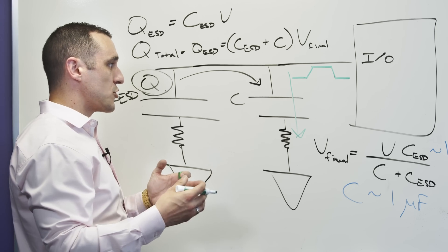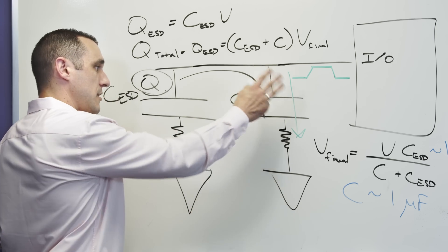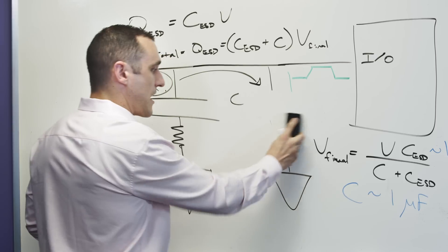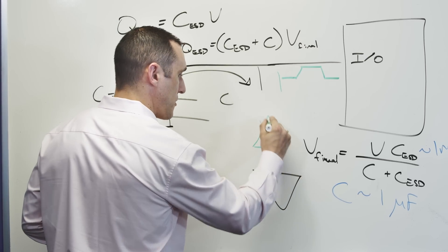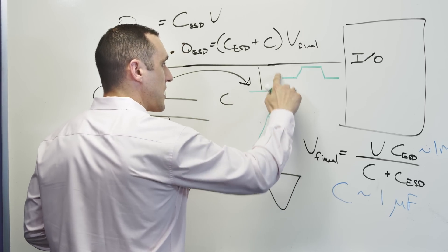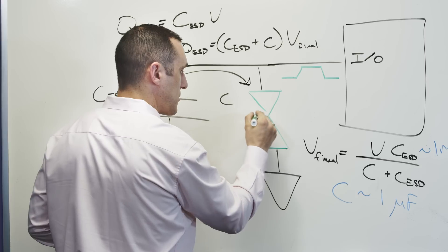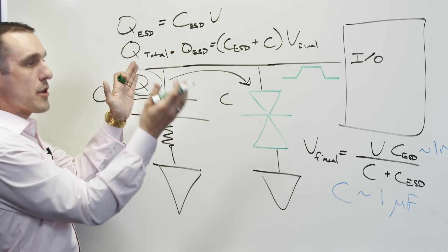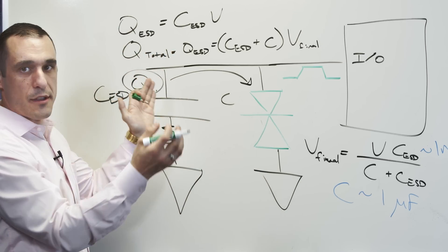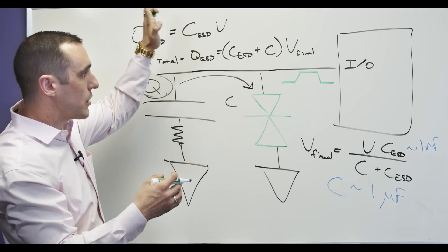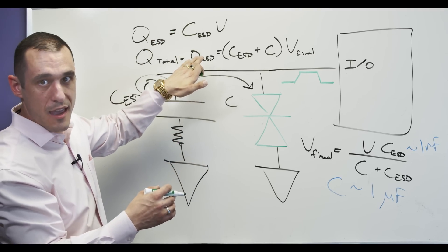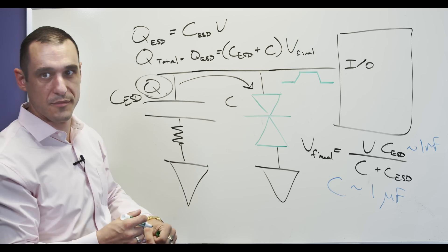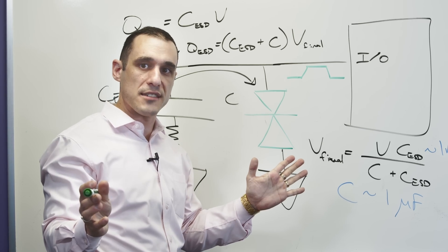These are all more reasons why instead of using this capacitor here, you should just use TVS diodes. And probably you should just use bidirectional TVS diodes in these systems. Mostly because if you're dealing with something like USB or Ethernet, you could have bipolarity on one of these lines, and so you want to be able to protect against ESD in both directions. This is just more justification for TVS diodes.